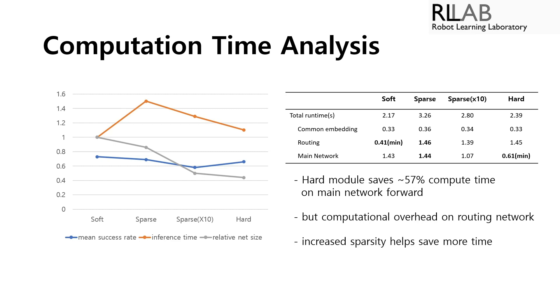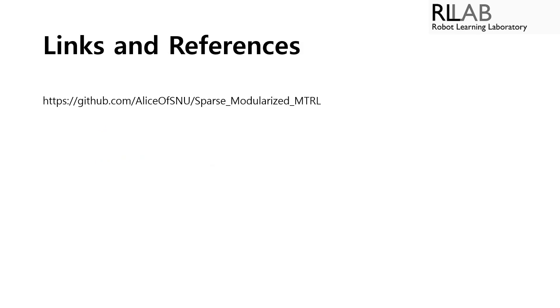So in conclusion, I have designed a new hard selection approach to multitask learning. Hard modularization allows to discard unused modules and also save main network forward time. For more information on the project, you can visit the project GitHub. Thank you.